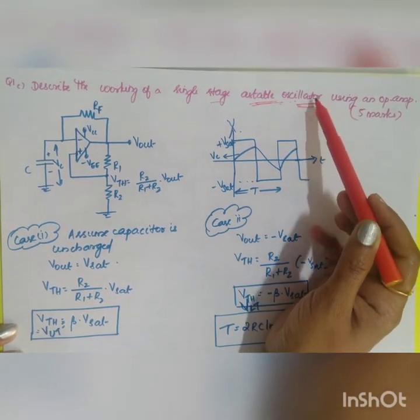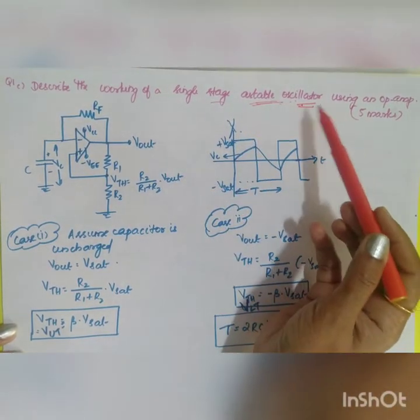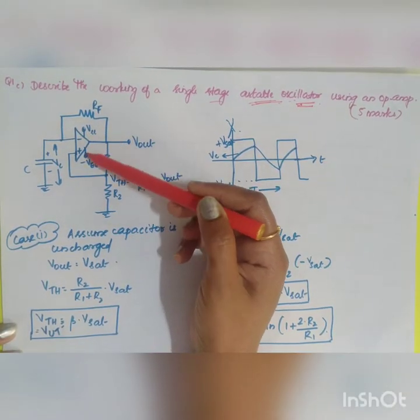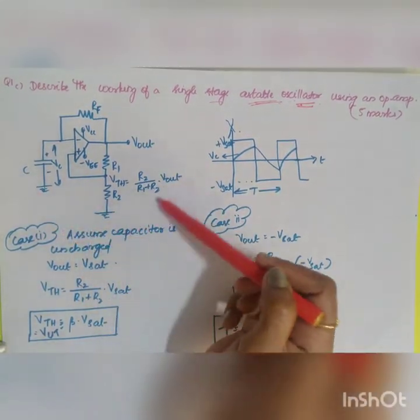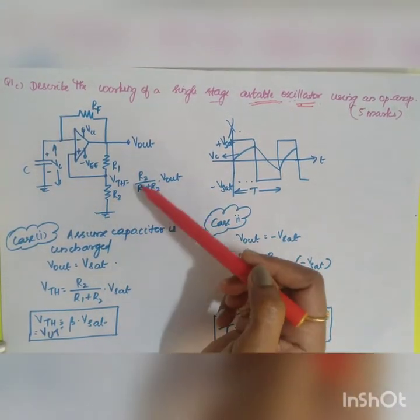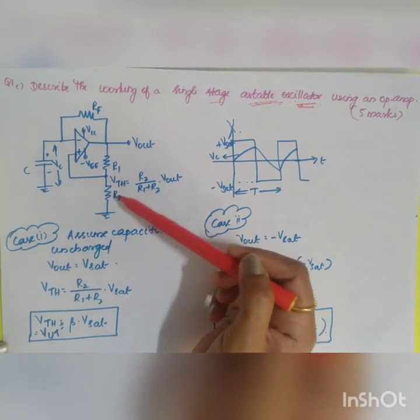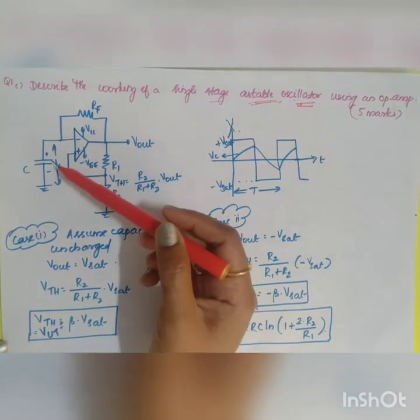Since it's an oscillator you are not going to apply any input signal. The only signal is your DC supply voltage VCC and minus VE. This is your diagram of your astable oscillator, your op amp as an astable oscillator.